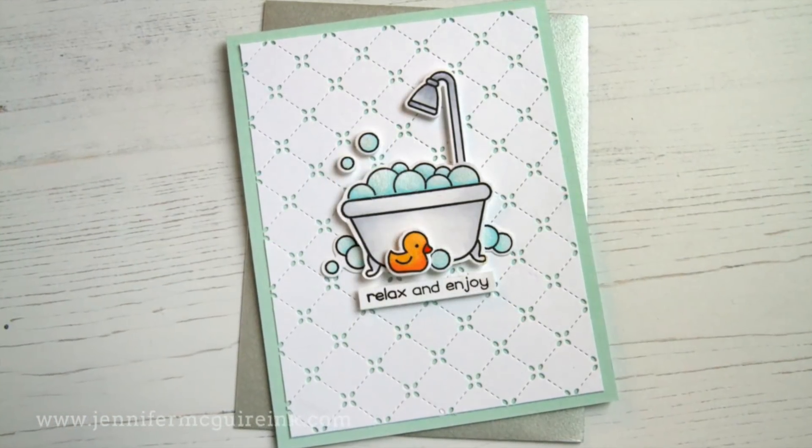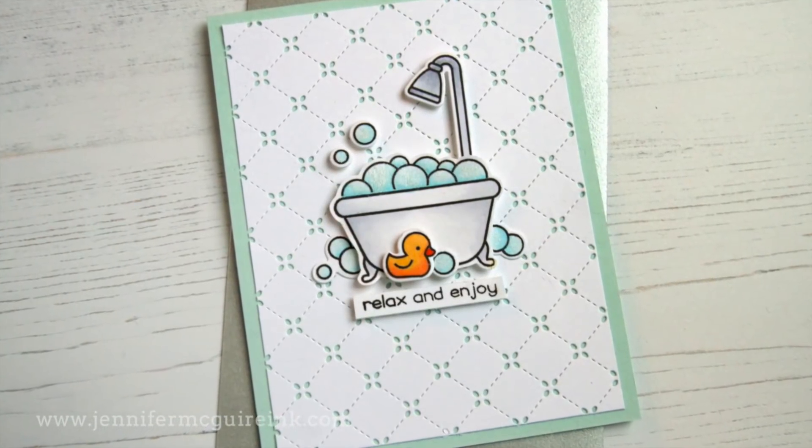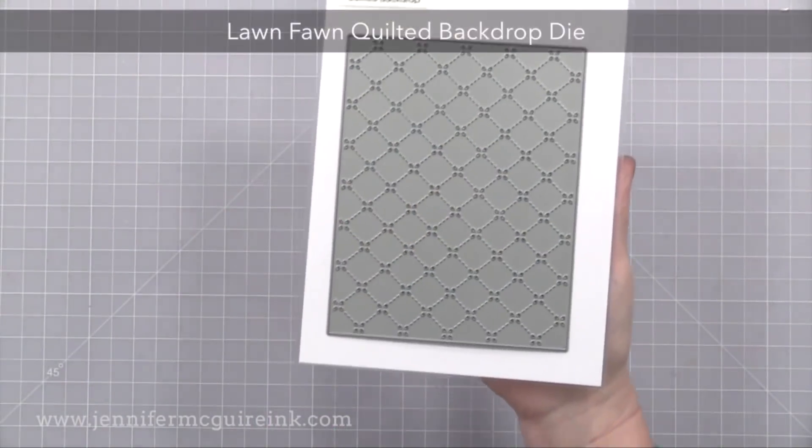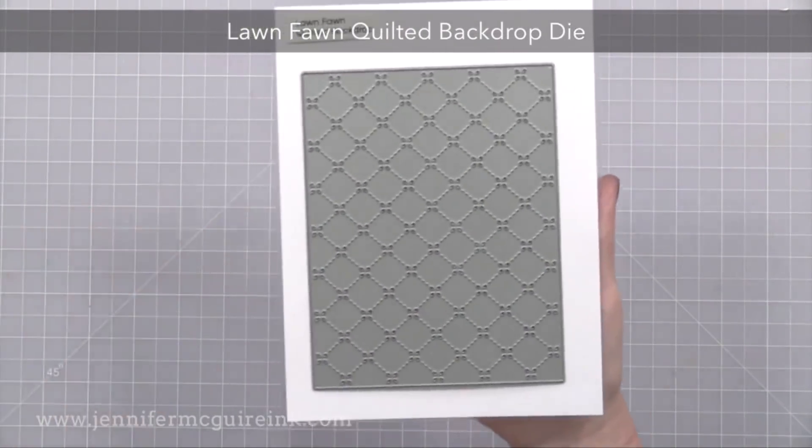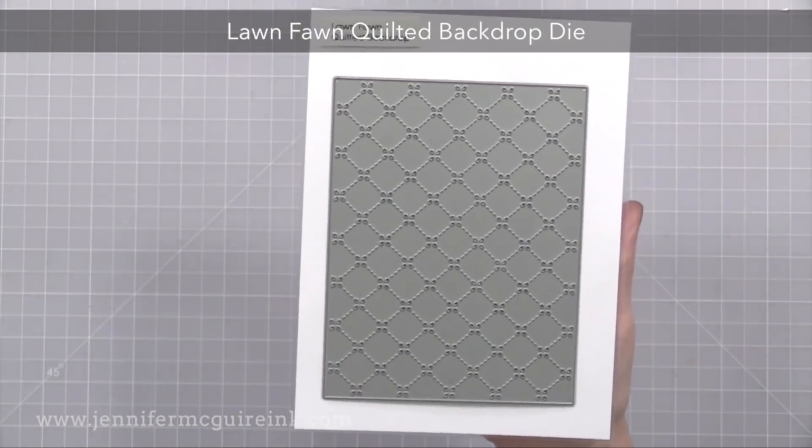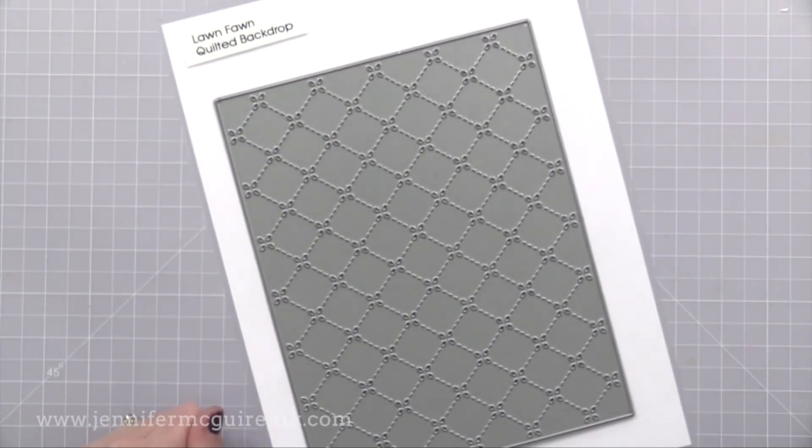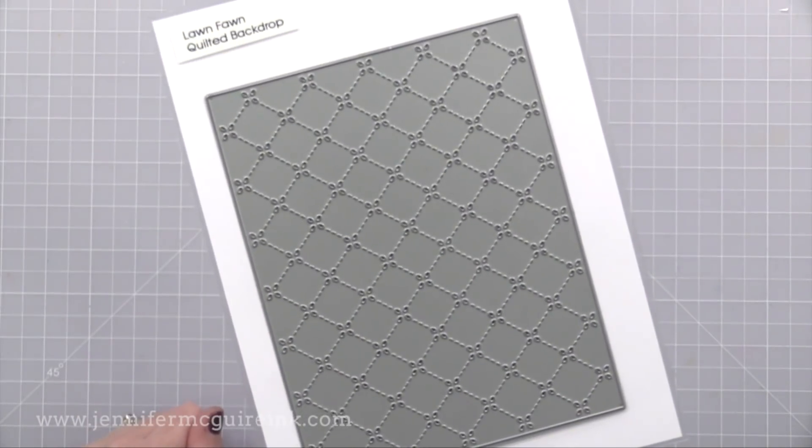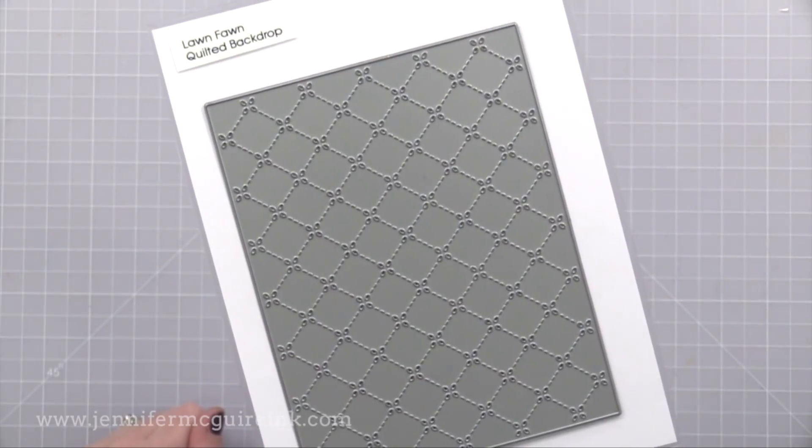Here is another card and I almost got this one finished but I thought I would share with you what I created. This uses some other new Lawn Fawn products that are gorgeous. This is the Lawn Fawn Quilted Backdrop Die. This cuts a four and a quarter by five and a half inch piece with all of that detail to it. I think that is so beautiful. By simply creating a background with this you don't have to add much else to the card.